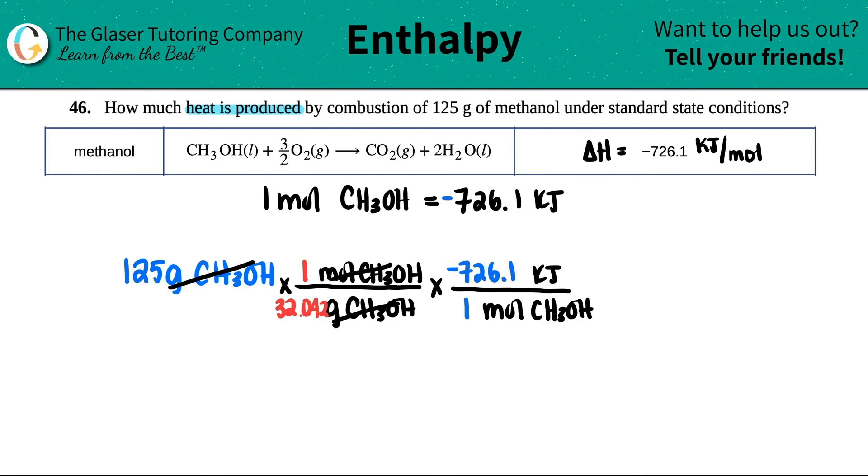Now when we do this, if we keep the negative in here, remember the negative just means it's released, you're going to get a negative amount of kilojoules. So that's fine. So let's see. 125 divided by 32.042 times 726.1. I get, ooh, I get a lot.